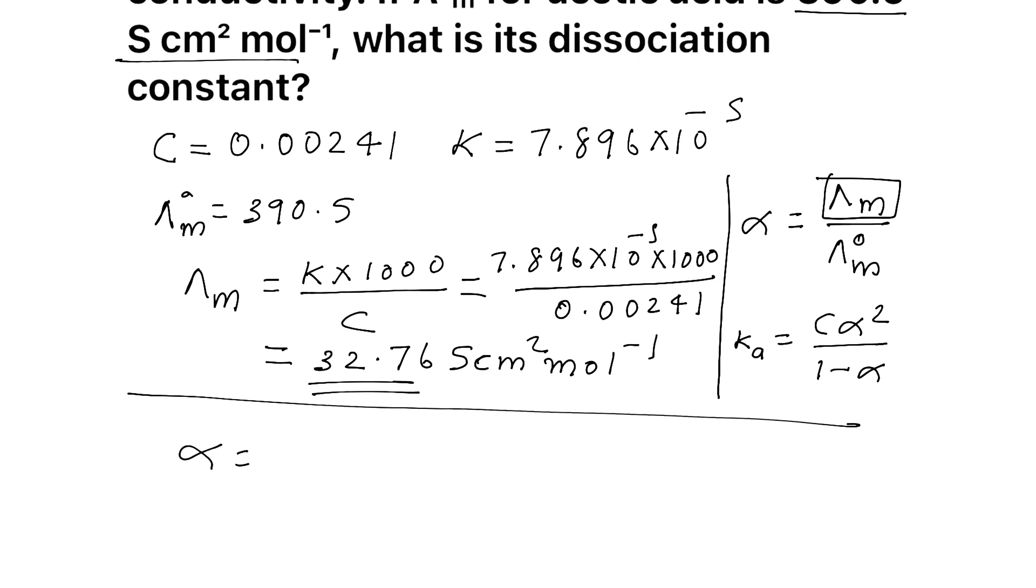Alpha. Alpha is what? Lambda M by Lambda M standard. So, it is 32.76 divided by 390.5. On dividing, you will be getting like 0.08389. Now, if you want to represent this in percentage, just multiply it with 100. You will get alpha in percentage. So, it should be like 8.389 or 8.4 percentage. That is degree of dissociation in percentage.